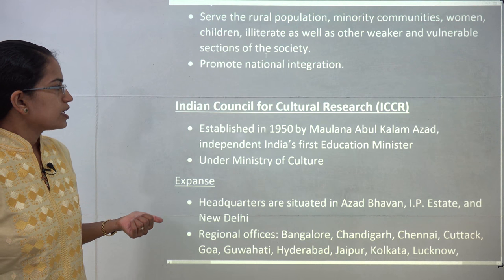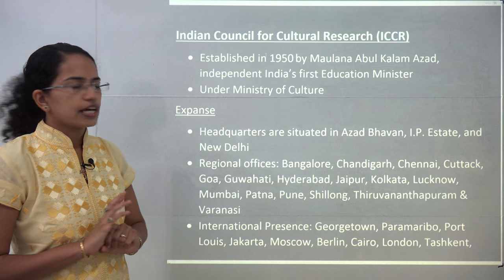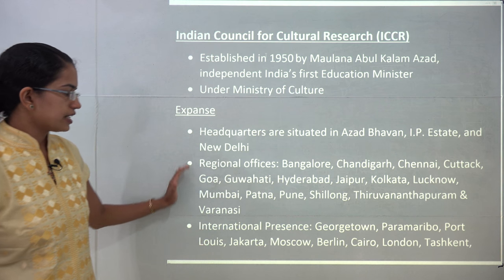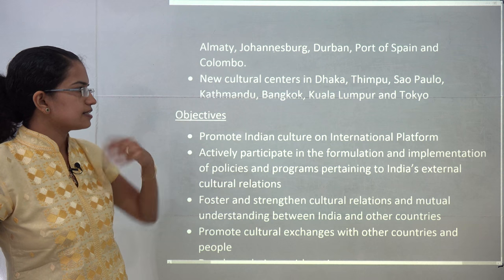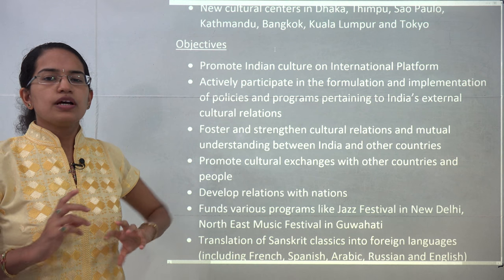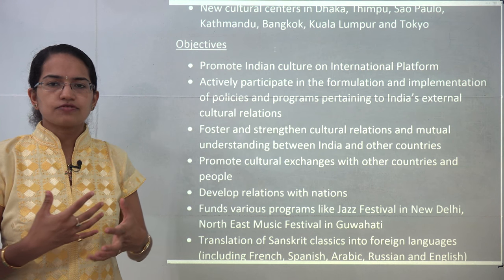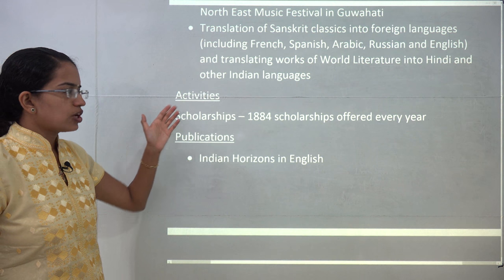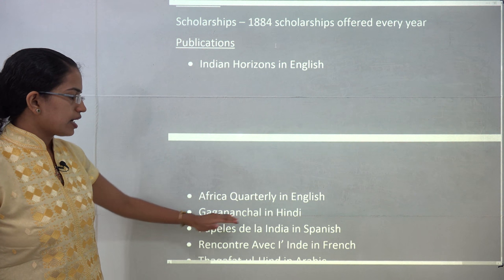The Indian Council for Cultural Relations, ICCR, was established in 1950 by Maulana Abdul Kalam Azad, India's first Education Minister. It comes under the Ministry of Education and is headquartered in New Delhi, with various regional offices and international presence. The idea is to provide Indian culture an international platform, build relations with other nations, and offer translation services from Sanskrit to foreign languages and vice versa. ICCR provides scholarships to nearly 1,800 candidates every year and has publications like Indian Horizon in English and Ganga Nachal in Hindi.